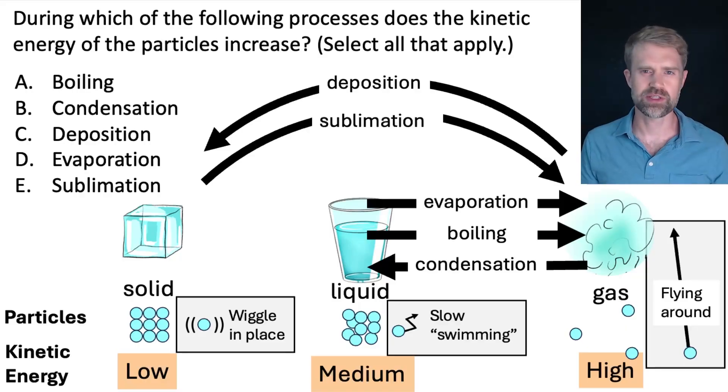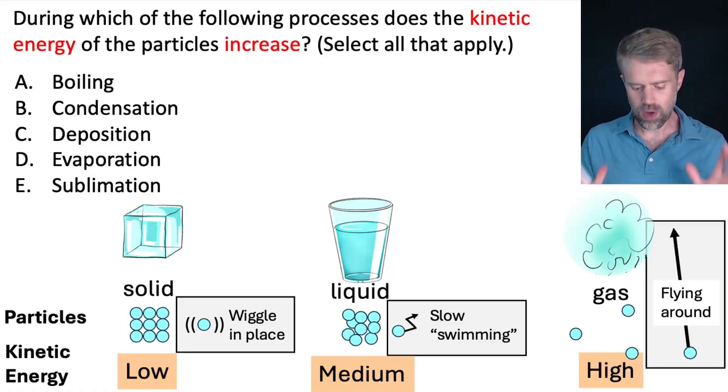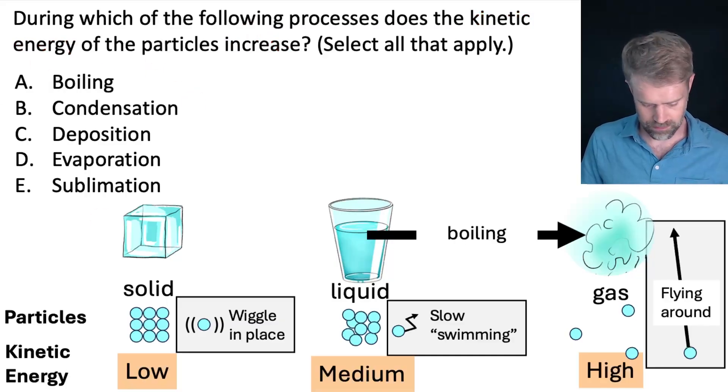Now that we know all this information, we're going to put it together to finally answer the question. We're looking for the choices where kinetic energy increases. Okay. We'll go one by one. First off, boiling. Liquid to gas. Kinetic energy goes from medium to high. Okay. Pick it. Definitely kinetic energy increases there.